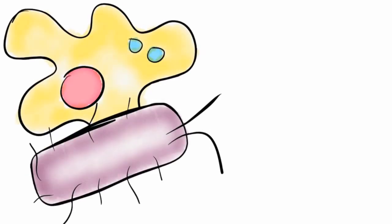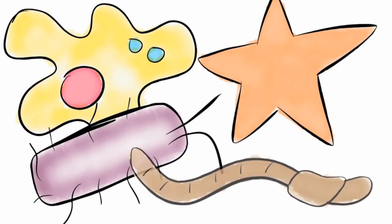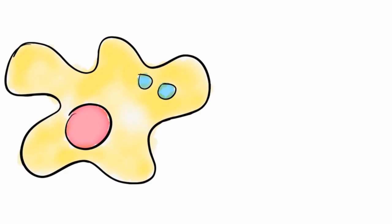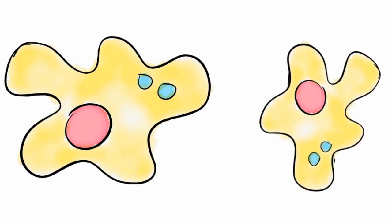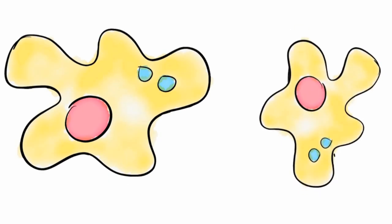Other organisms reproduce asexually. In asexual reproduction, all of the genes come from a single parent. Asexually produced offspring are genetically identical to the parent.